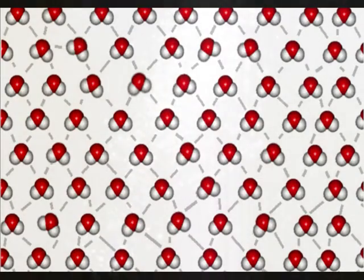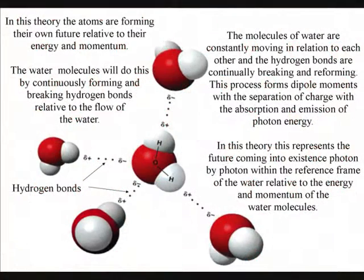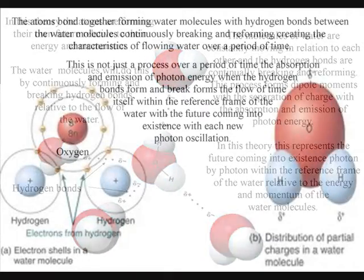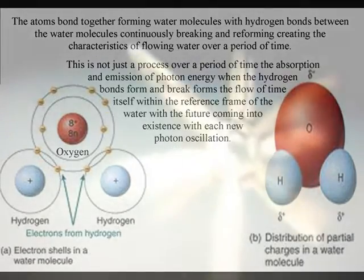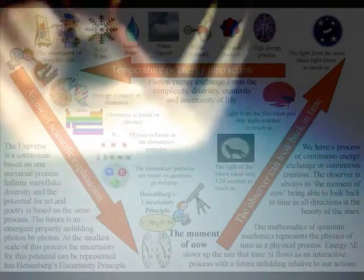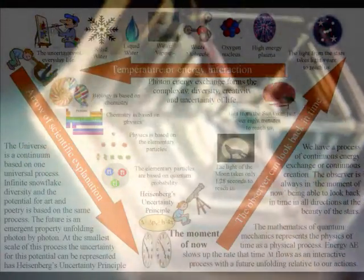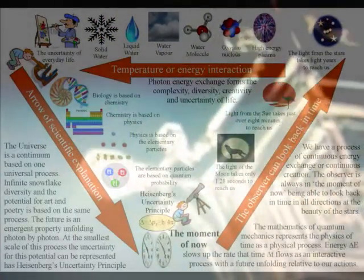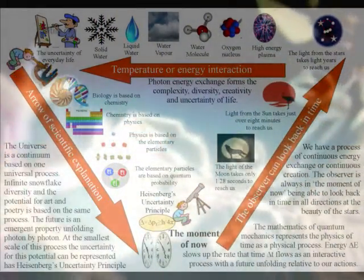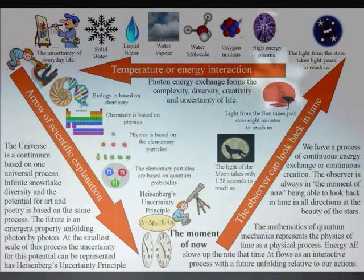Take flowing water for an example. Within flowing water we have hydrogen bonds breaking and reforming, releasing photon energy with the future unfolding relative to the flowing water. The interactive nature of this process can be seen in snowflake diversity, being due to variations in photon oscillations linked to changes in atmosphere temperature. This forms an infinite variety of snowflake diversity with no two patterns of snowflakes being the same in the entire world.